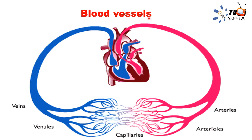Now the next part is blood vessels. Any medium carrying blood in the body is called a blood vessel. Blood travels from the heart through arteries, which branch off into smaller tubes called capillaries. From capillaries, the blood joins up into venules, which then join into larger tubes called veins, and the veins carry the blood back to the heart. We will discuss arteries, capillaries, and veins in detail.